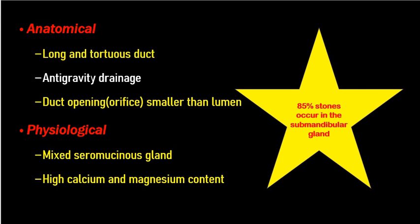As we know, the parotid gland is a serous secreting gland, whereas the submandibular gland is a seromucinous secreting gland, and the minor salivary glands are usually mucinous glands. So as you go from larger to smaller salivary glands, the amount of mucin increases.